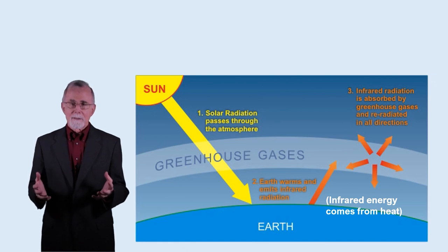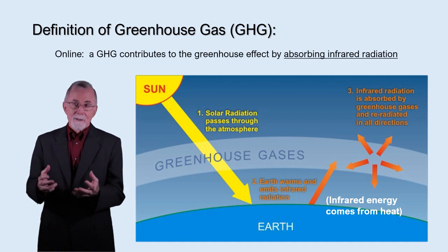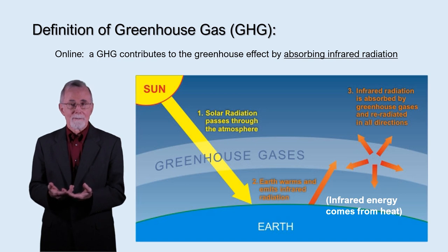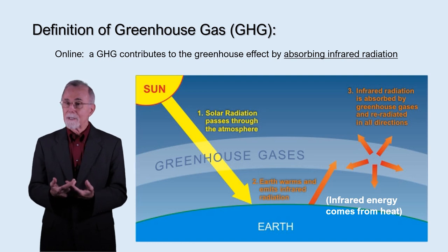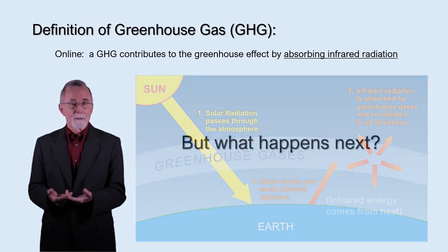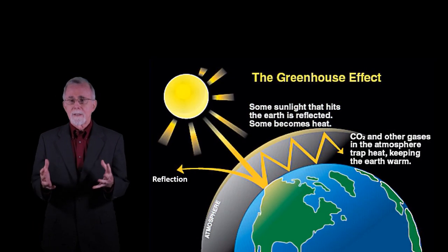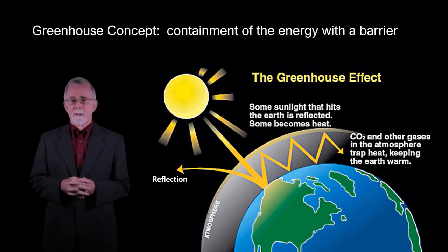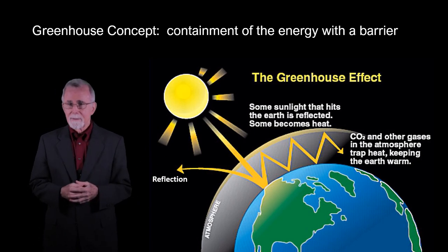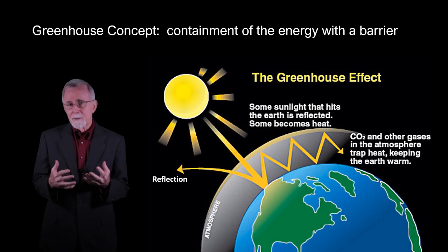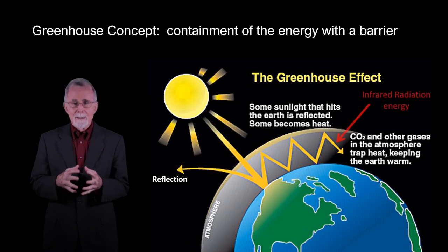Definition of greenhouse gas — let's look at what is online as a definition. A greenhouse gas contributes to the greenhouse effect by absorbing infrared radiation. Sunlight warms the Earth's surface, and some of the heat loss is through infrared radiation, some of which is absorbed by greenhouse gas. What happens next? As you recall, the greenhouse concept is containment of the energy with a barrier. We can see the incoming solar energy heats the Earth's surface, with some energy being released as infrared radiation.